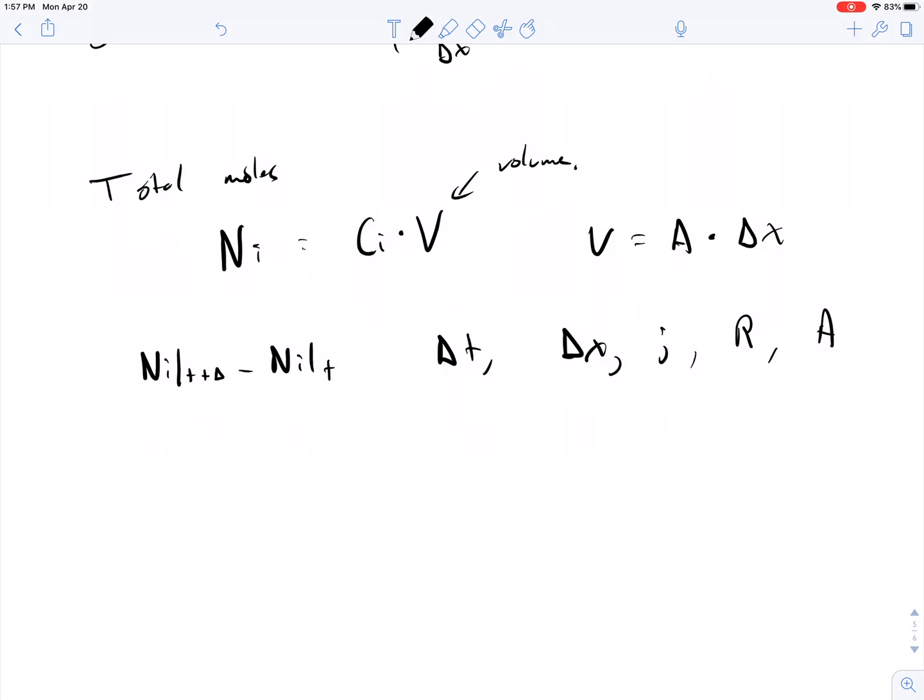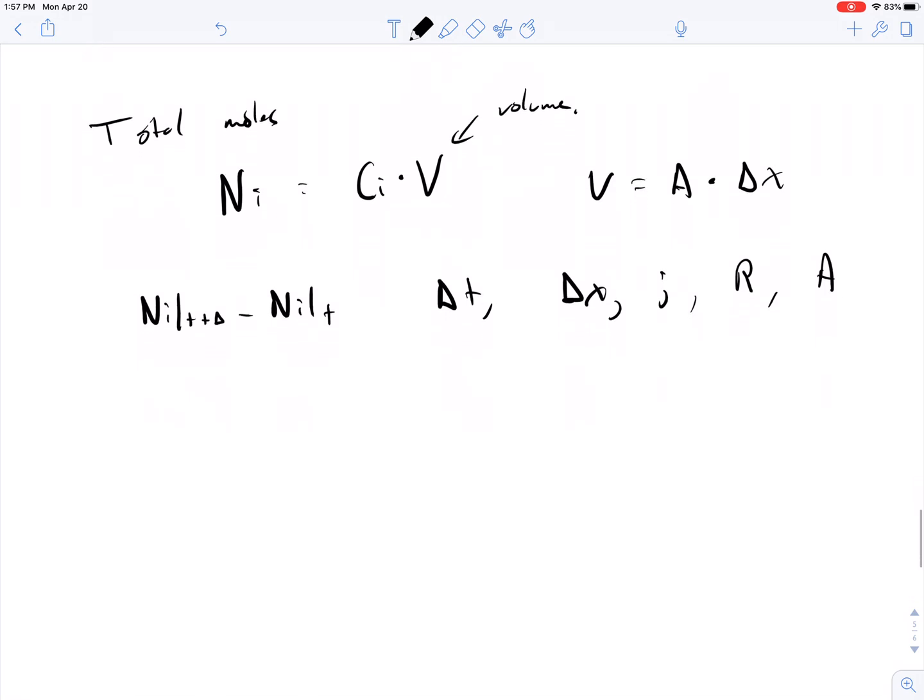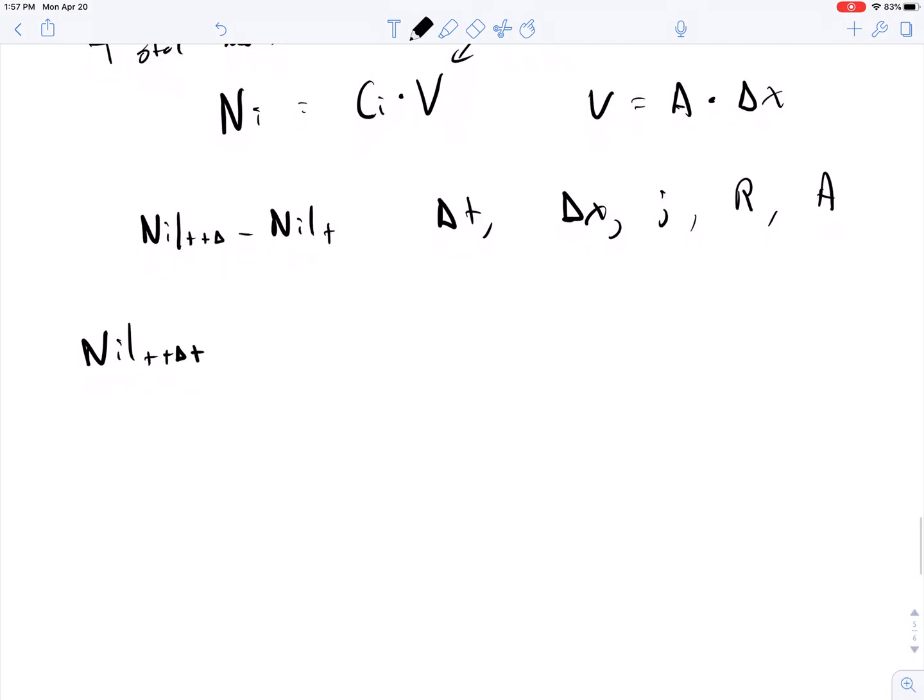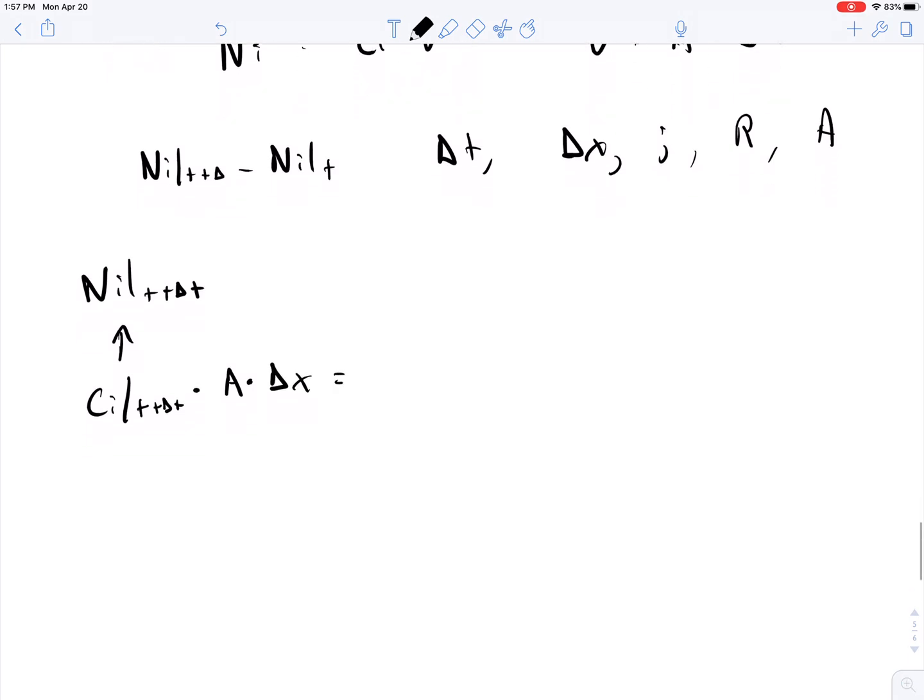So like we do for many other problems, you set up a shell balance. So the amount of material at some future time point, compound I at some time plus delta T, is going to equal what was there before. But let's make this more granular. So this is equal to the concentration at some time T plus delta T times A times delta X.